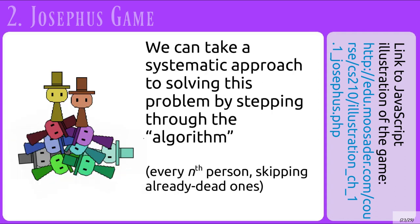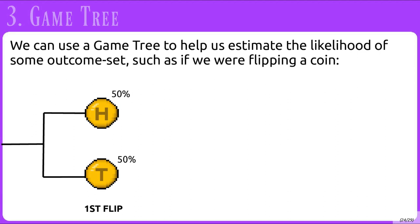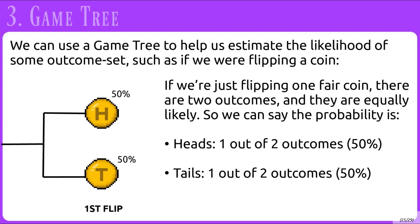We can take a systematic approach to solving this problem by stepping through the algorithm. Now let's look at game trees. We can use a game tree to help us estimate the likelihood of an outcome set, such as if we were flipping a coin again. If we are just flipping one fair coin, there are two outcomes and they are equally likely. So we can say that the probability for heads is one out of two outcomes, or 50%, and for tails, one out of two outcomes, or 50%.